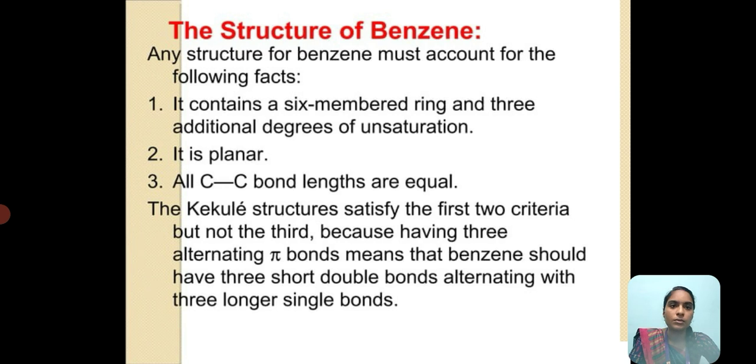The structure of benzene must account for the following facts: it must contain a six-membered ring with additional degrees of unsaturation, it is planar, and all carbon-to-carbon bond lengths are equal. Kekulé demonstrated a structure for benzene which satisfies the first two conditions but fails to satisfy the third condition.